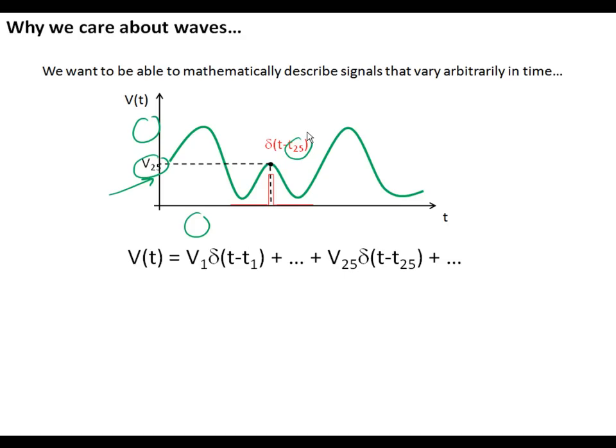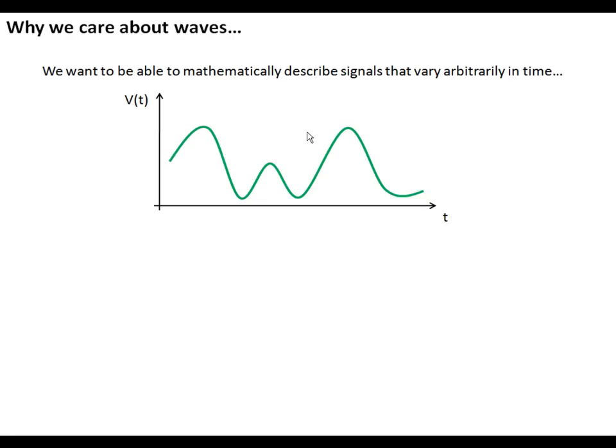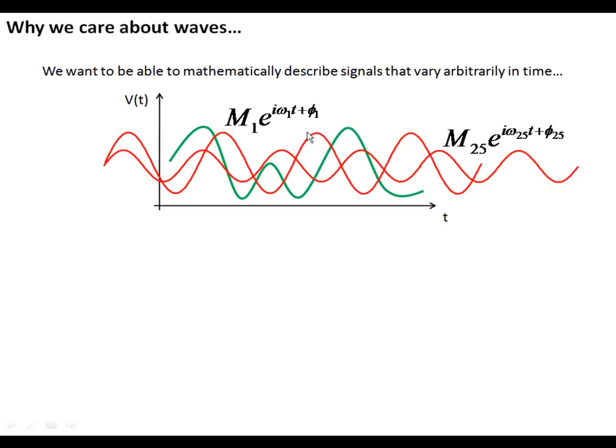It turns out that mathematically there's in fact another way to do it as well, and that's to sum up a bunch of waves, that this green signal can be represented by a wave with magnitude M1, frequency omega 1 with some arbitrary phase phi 1, plus a bunch of other waves all the way up to wave 25 with a magnitude, frequency, and phase that's different.